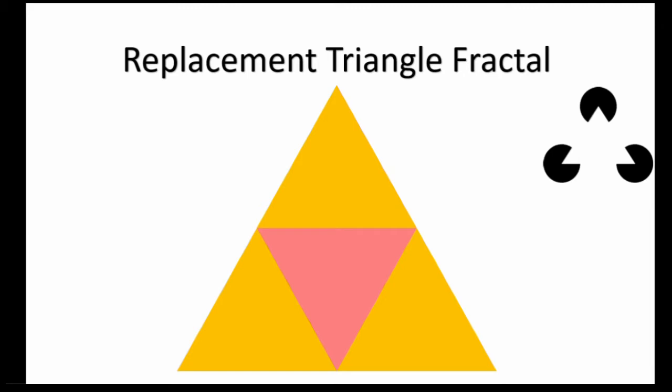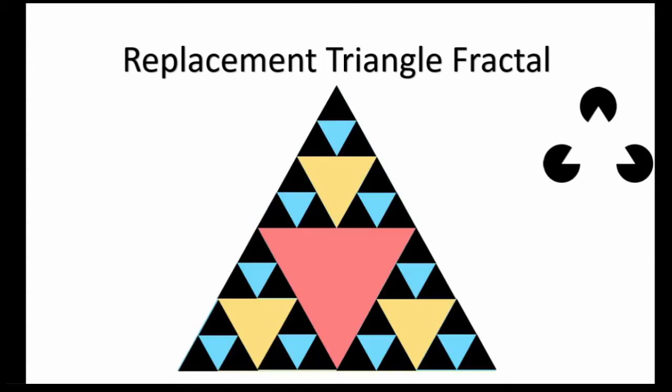To continue drawing this fractal, just replace three large triangles with nine smaller ones, three each. Remember that it is no longer necessary to draw the replaced triangles, just the replacement triangles. This can be continued indefinitely.